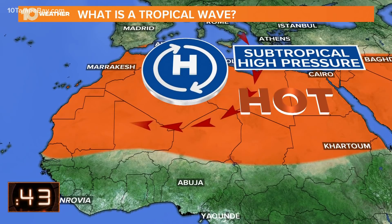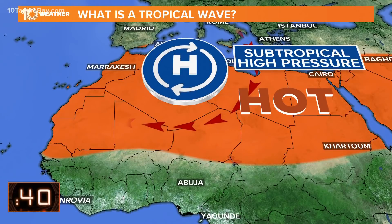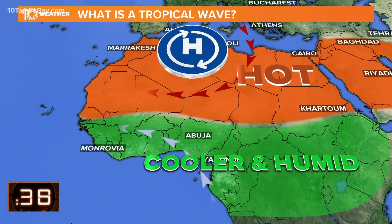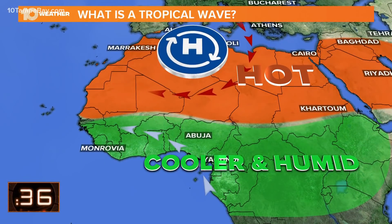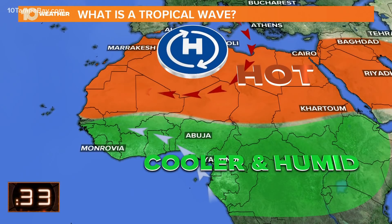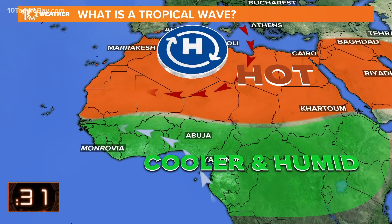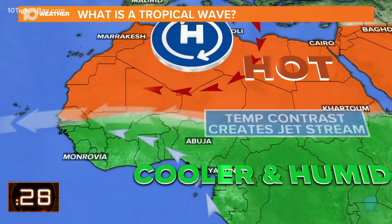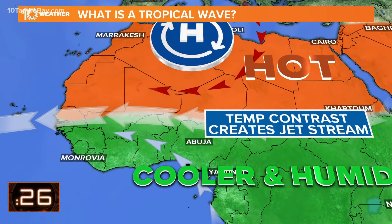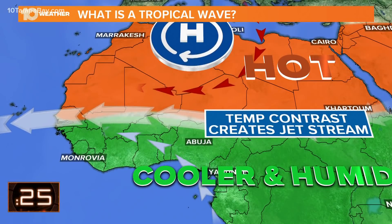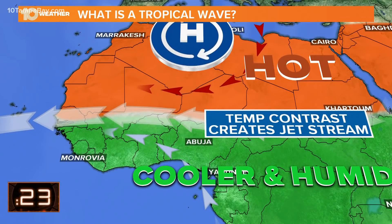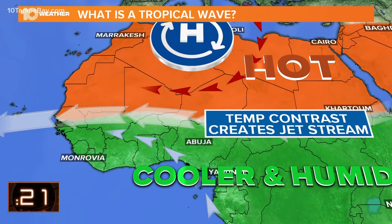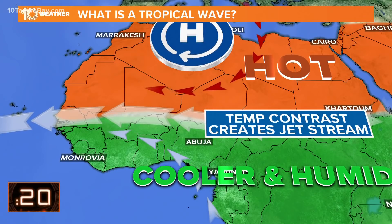There's a subtropical ridge of high pressure, and you have that clockwise flow around the center of high pressure. That pushes air to the south, towards the cooler and more humid conditions coming off the forests in southern Africa. Those two conflicting air masses create a temperature contrast, and that temperature contrast creates the African easterly jet stream in the low and mid levels of the atmosphere.